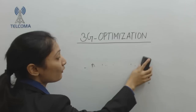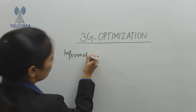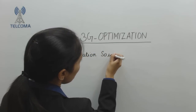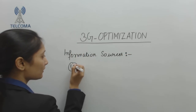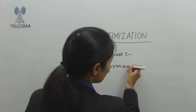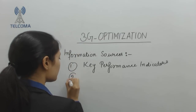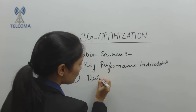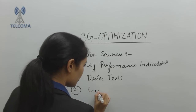If we need to check the performance of a network, we need some input parameters on the basis of which we can evaluate it. We should have information sources such as Key Performance Indicators, regular drive tests, and customer complaints.